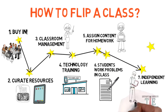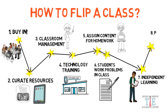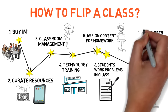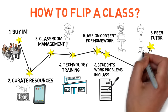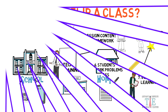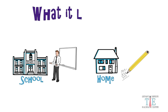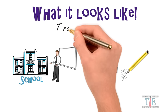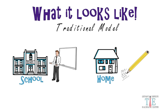Number seven is independent learning. With a flipped classroom, students become independent learners and have the ability to move through the curriculum at their own pace. The last star, number eight, is peer tutoring: pair up advanced students who have mastered the content with students who are having a hard time completing the problems.